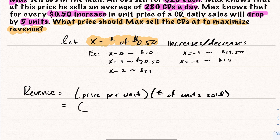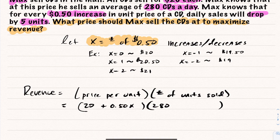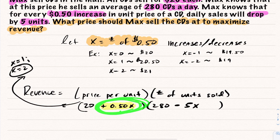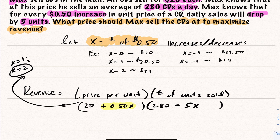How can I represent the price per unit? Well, I know that if I charge $20, I'll sell 280 CDs. Now if I add a plus 0.5X to the price expression — making it (20 + 0.5X) — that represents increasing the price by 50-cent increments. And for the units sold, I need to account for losing five sales per increment, giving me (280 − 5X). If I let X equal one, the price goes to $20.50, and I lose five sales.